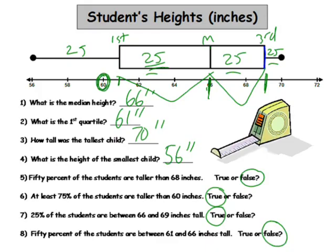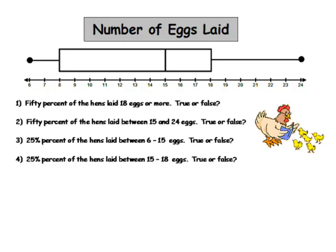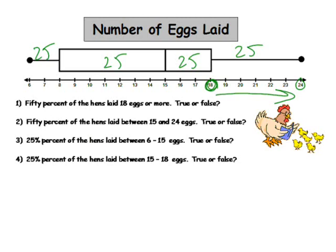Let's do one more boxplot. You could pause this now and try to answer these questions. Here we have number of eggs laid by different hens. When you first look at it, it looks like a lot of hens laid between 18 and 24 eggs and only a few laid 15 to 18 eggs — but that's not true. Remember, these all represent one-fourth of the data, or 25%. So, 50% of the hens laid 18 eggs or more — false, only 25% laid 18 eggs or more.